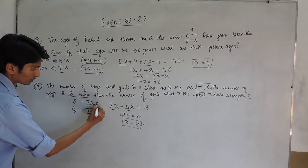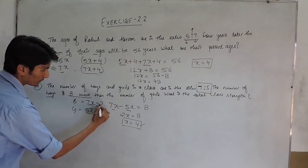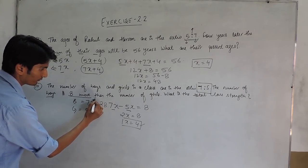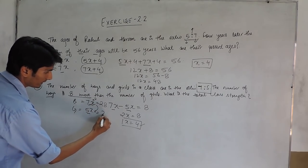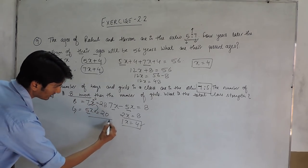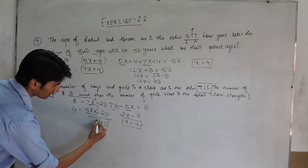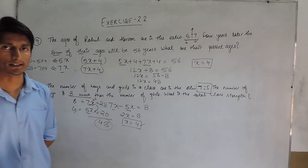Putting the value of x here, the number of boys would be 28 because x is 4. So, 7 into 4 is 28 and this would be 20. The total strength would be 48. Thank you.